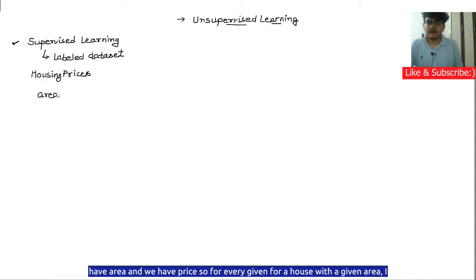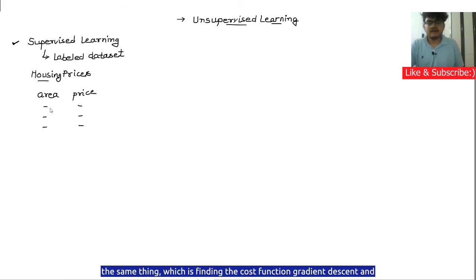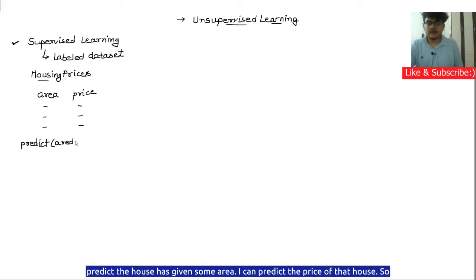In the housing prices dataset, we have area and we have price. For a house with a given area, I have a mapping to a price, and I can use this mapping to train the model by finding the cost function, hypothesis function, and gradient descent. Then I can predict the price of a house given some area.